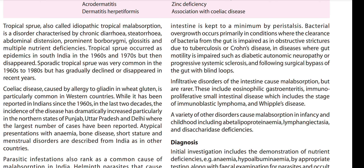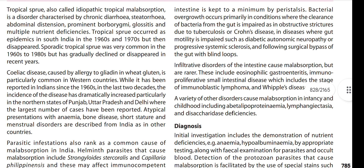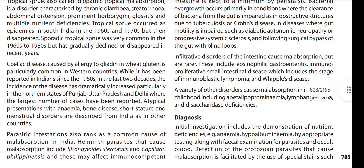A very rare condition is Whipple's disease, which is caused by bacterial malabsorption and has symptoms similar to tropical sprue — diarrhea, weight loss, steatorrhea, and borborygmi. Additionally, CNS and CVS systems are involved: patients may develop dementia, seizures, and cardiac valve disease.